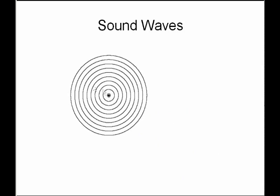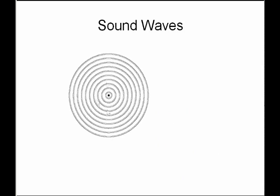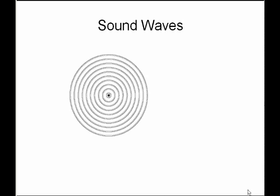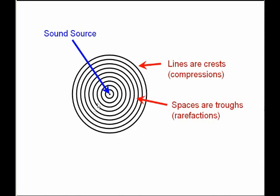We looked at sound waves coming out from an original source and we're going to continue with the same kind of diagram but relate it to light waves as well. If we have a source such as a light bulb, light is going to be coming out in all directions. In our drawing, the line represents the crest of the wave and the spaces represent the troughs of the wave. These terms apply to light waves because they are transverse waves. Sound waves are longitudinal waves — they have compressions and rarefactions, so every line would be like a compression. Remember the wavelength is the distance between two wave crests or between two compressions.